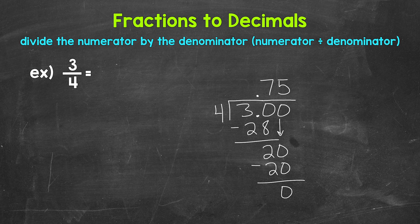So we are done. 3 fourths equals 75 hundredths. Let's write this up here: 3 fourths equals 0.75. Again, 3 fourths equals 75 hundredths.